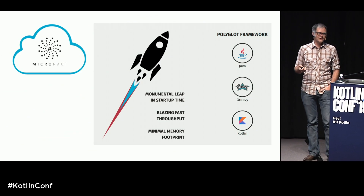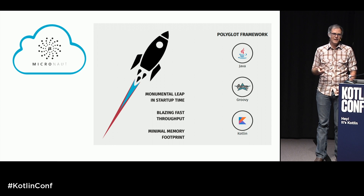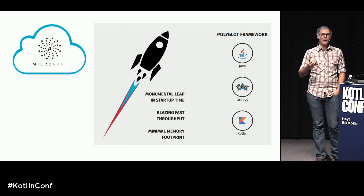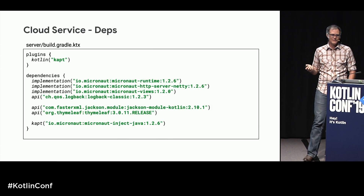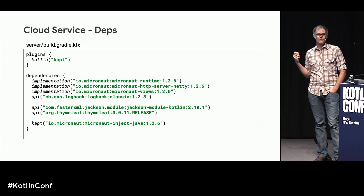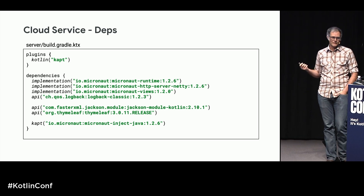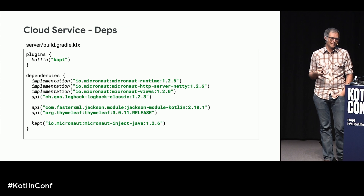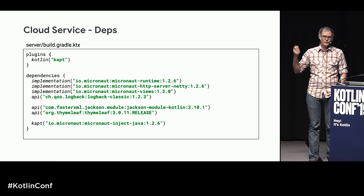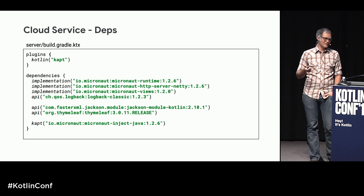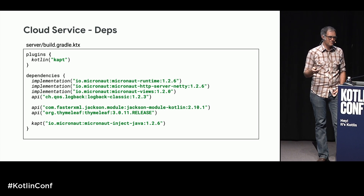For the server I used Micronaut, a newer web framework similar to Spring Boot, which supports annotation-driven programming for HTTP handling with great Kotlin support. To add it, we include the Kotlin Annotation Processor (KAPT) because Micronaut uses compile-time annotations instead of runtime reflection — which is nice for GraalVM ahead-of-time compilation and faster startup. Then we include Micronaut dependencies including Jackson for JSON serialization, and apply the Micronaut KAPT annotation processor.